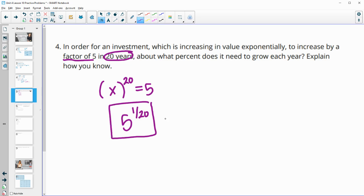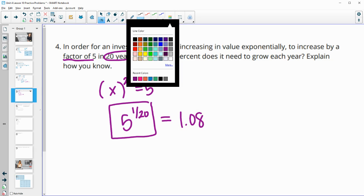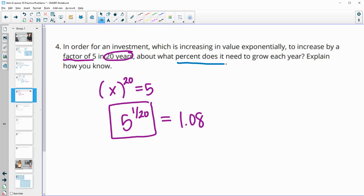And then if we did that, that would be 1.08 if we calculated that in our calculator. So then what percent does it need to grow each year? So this is how much is this over 100%, right? So this is 108%, so it needs to grow by 8% each year.